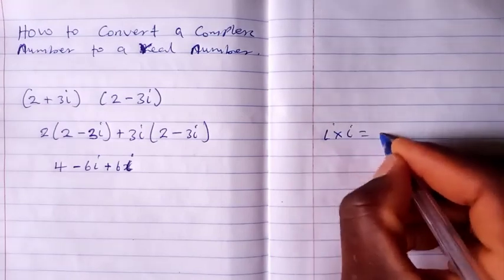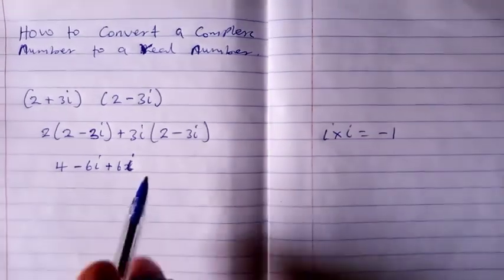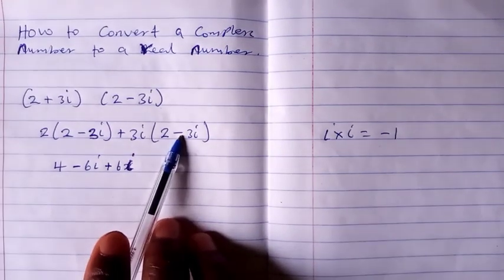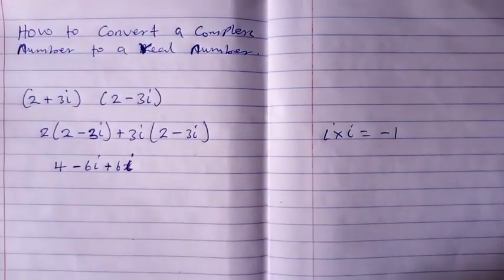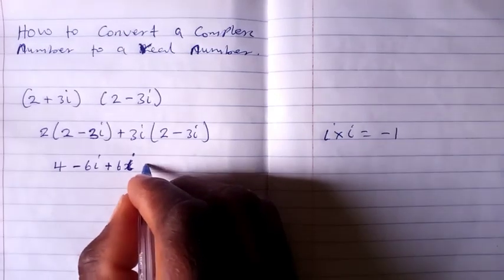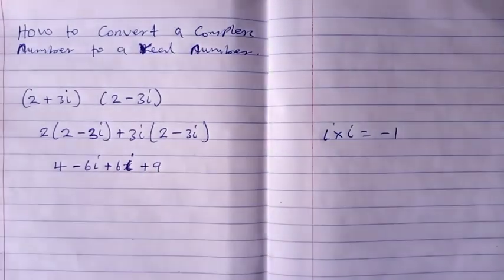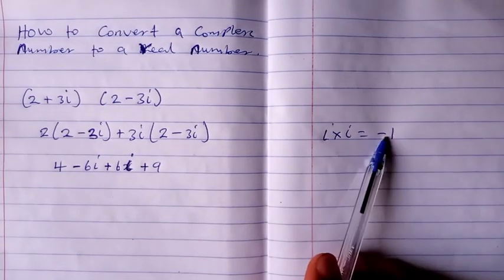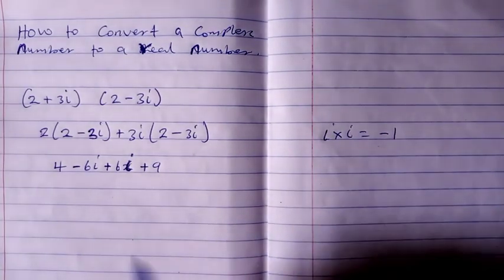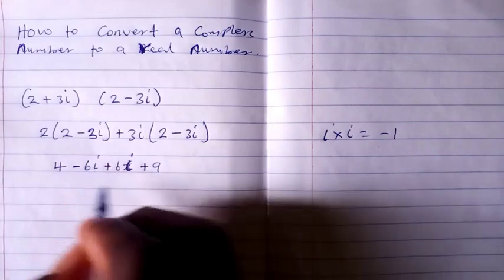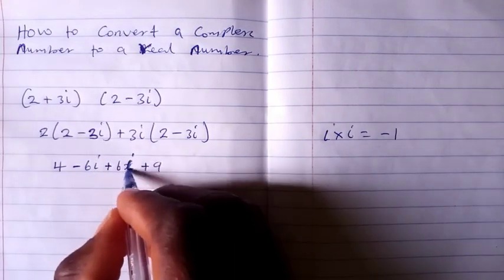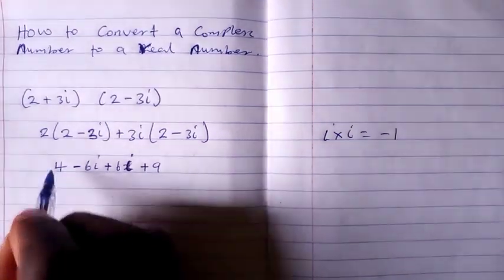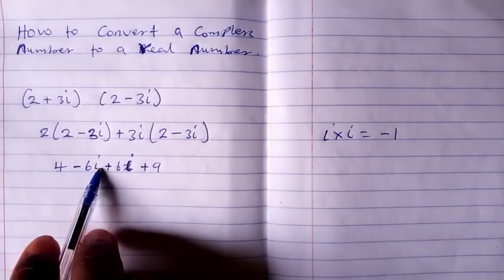So 3i times minus 3i will be equal to 9 plus 9, because minus times minus will give you plus. So we have 4 minus 6i plus 6i.